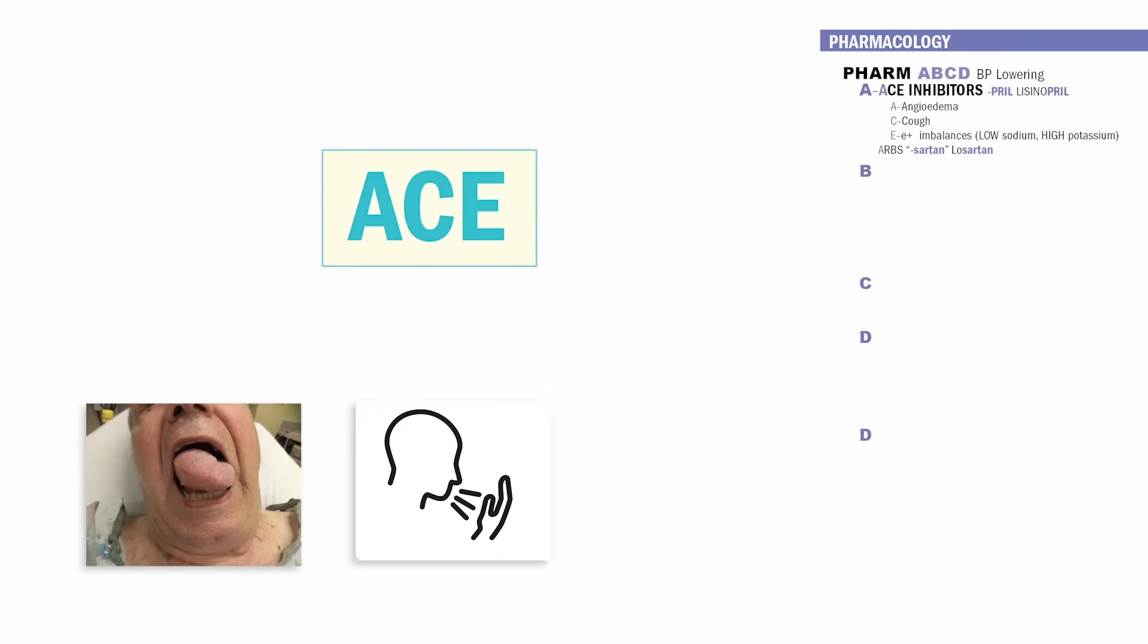The main side effects is ACE. A for angioedema, we get a swollen red tongue. C for a hacking cough, patient coughs like every five minutes. And E is for electrolyte imbalances. We have low sodium called hyponatremia and high potassium called hyperkalemia.